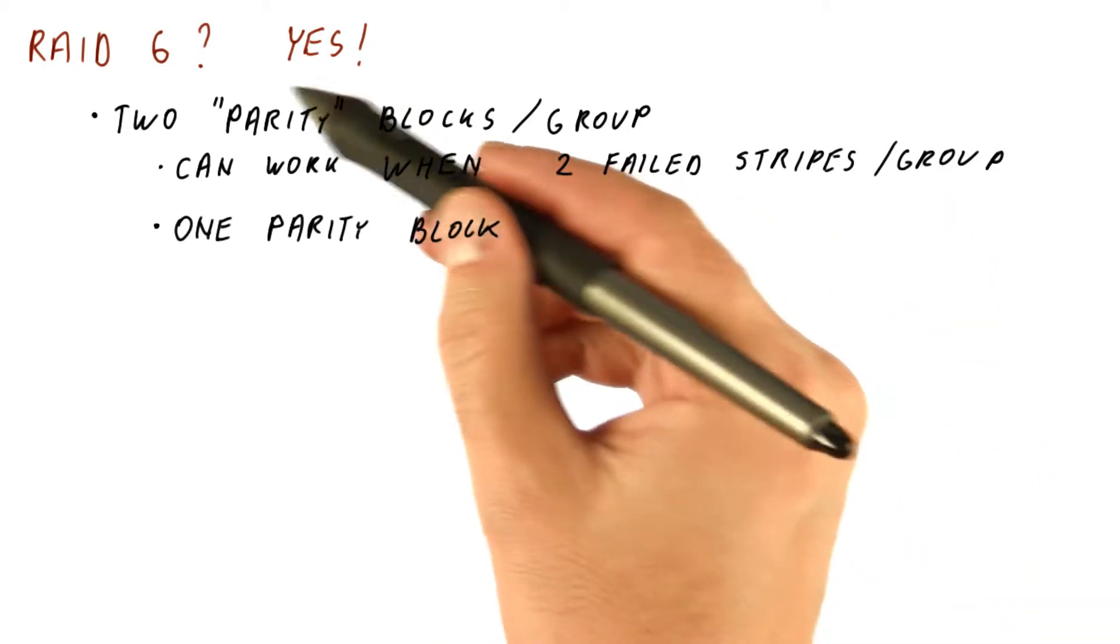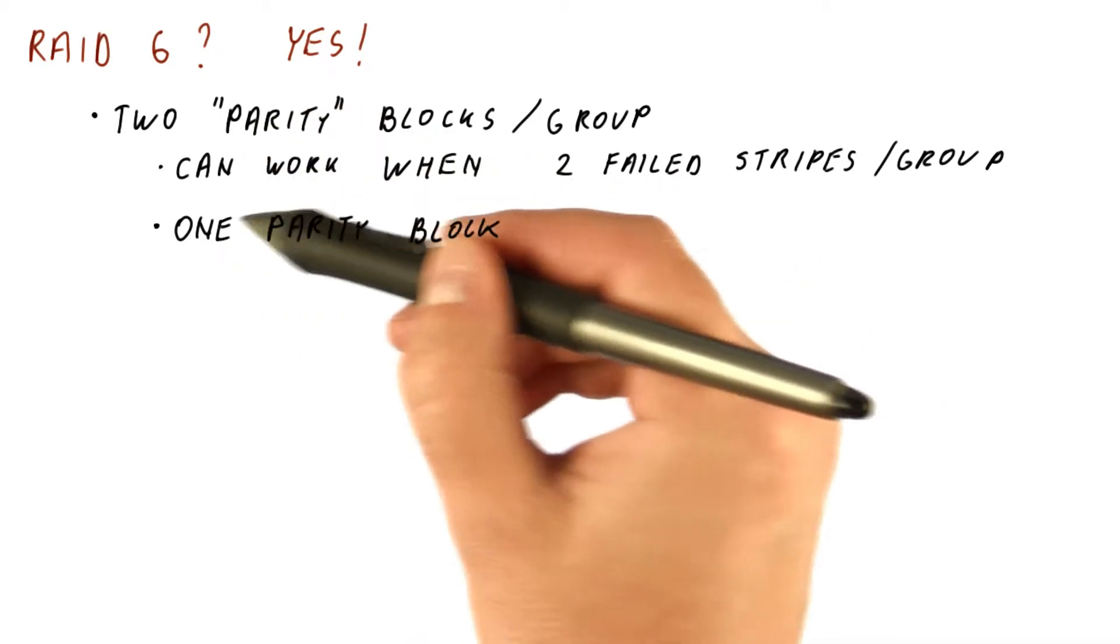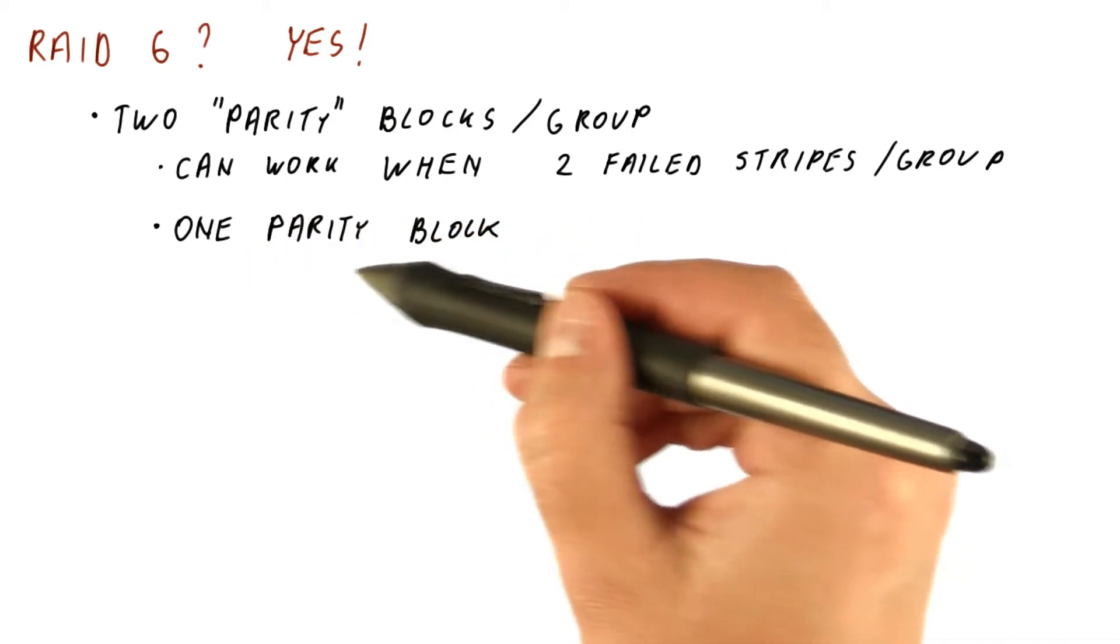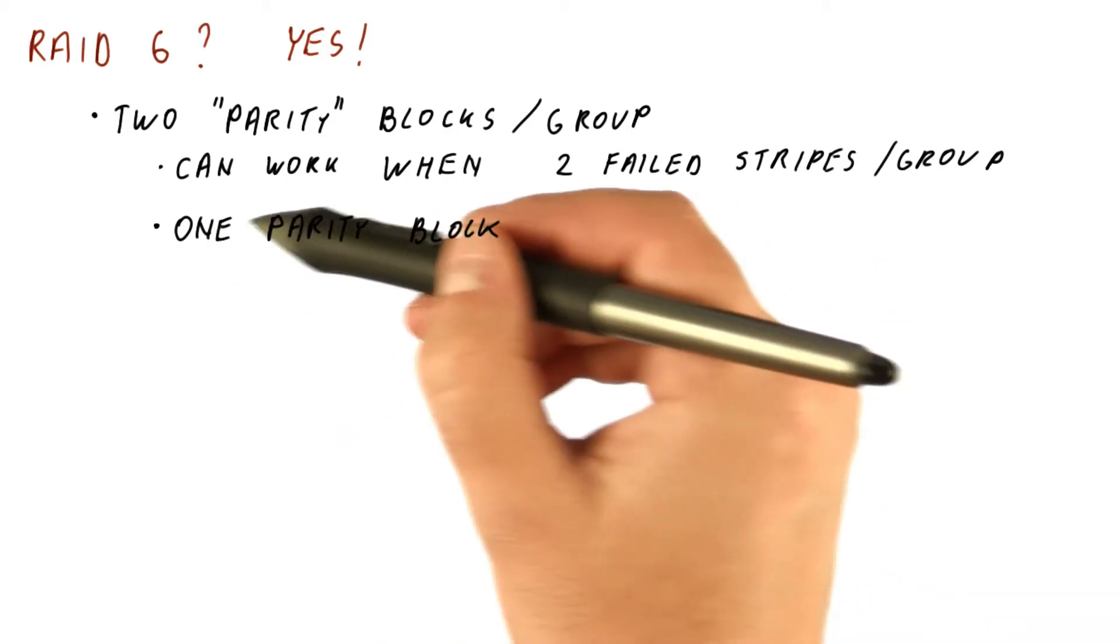Note that we cannot do this with two parity blocks. One of the blocks that we keep extra, one of the non-data blocks, is going to be the real parity block, and that's what fixes one error.